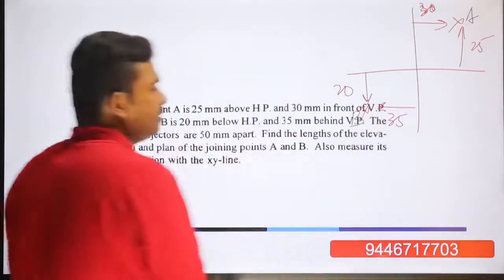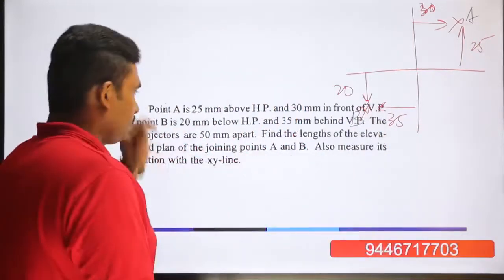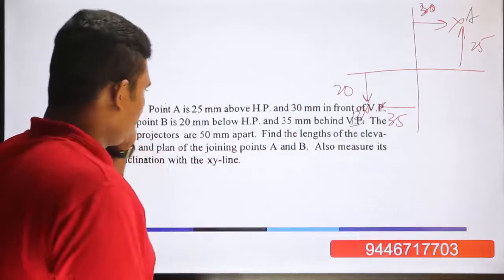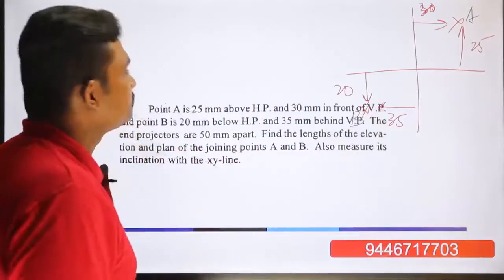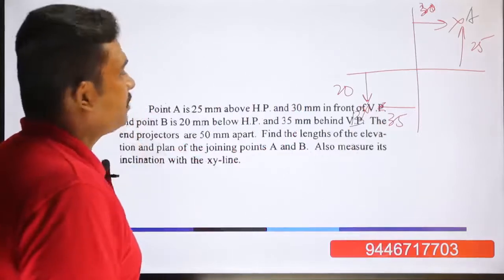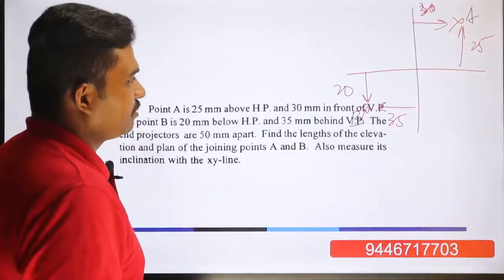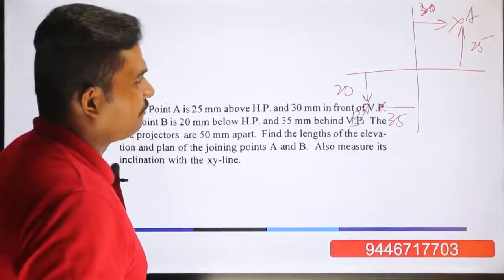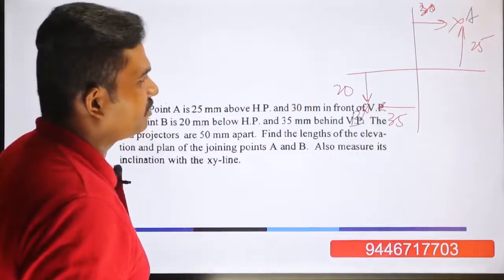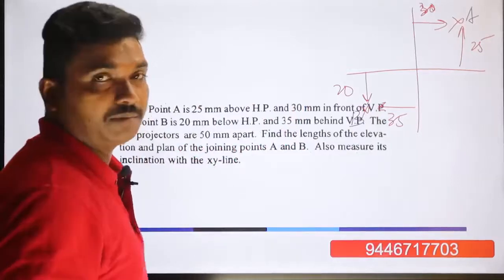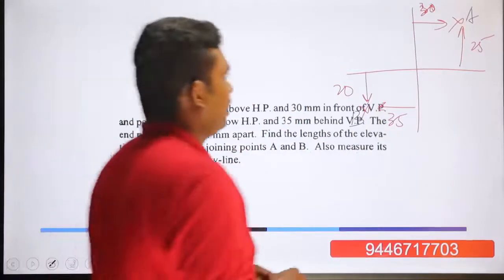Point B will represent the third quadrant. The distance between the projectors is 50mm. We will mark this as A via dash.